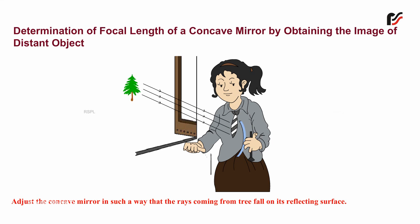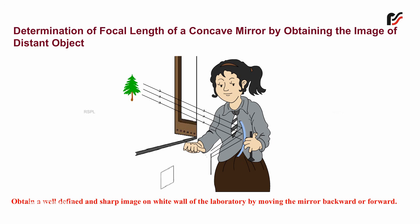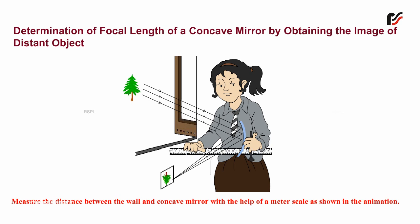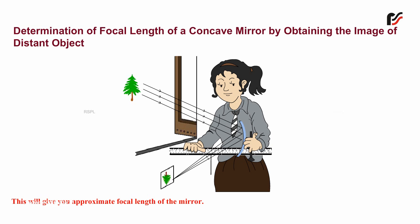Obtain a well-defined and sharp image on the white wall of the laboratory by moving the mirror backward or forward. Measure the distance between the wall and the concave mirror with the help of a meter scale, as shown in the animation. This will give you the approximate focal length of the mirror.